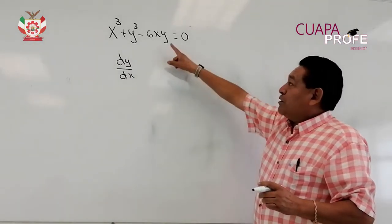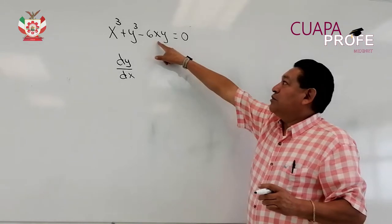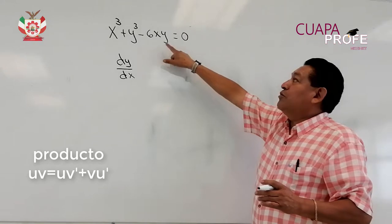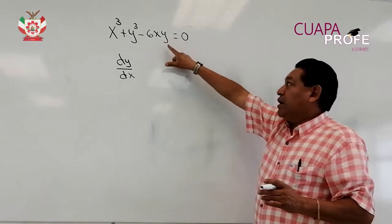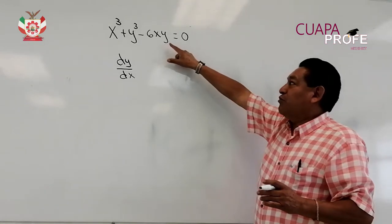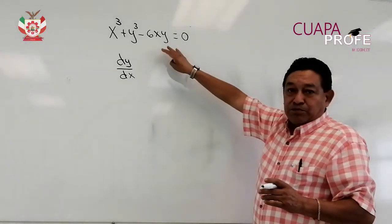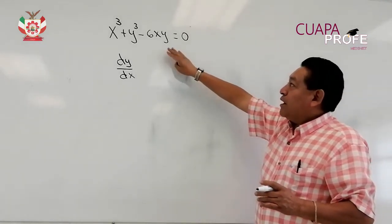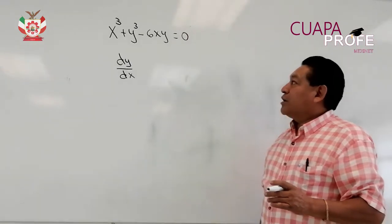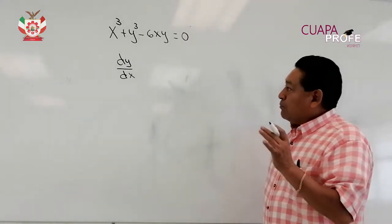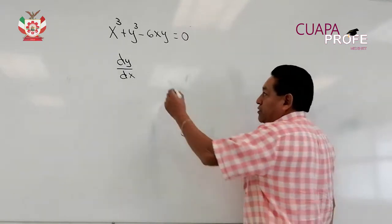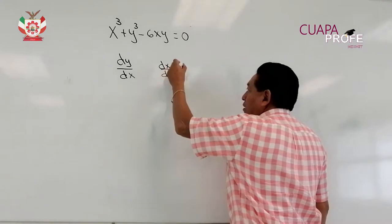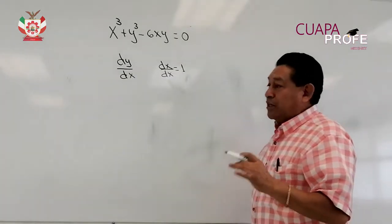Como podemos observar, aquí tenemos un producto que sería 6x por y. Entonces aquí va a ser necesario aplicar la regla de la cadena como si fuera un producto. Es importante tomar en consideración este aspecto para obtener una derivada correcta. No debemos olvidar que la derivada de x con respecto de x es igual a la unidad.